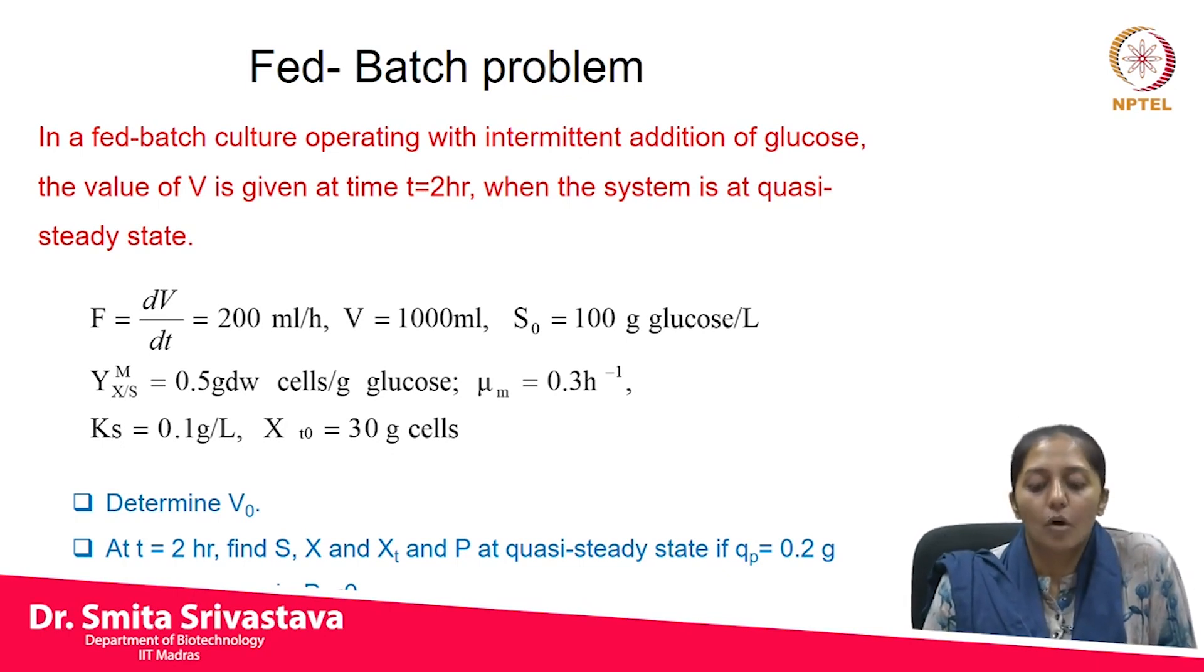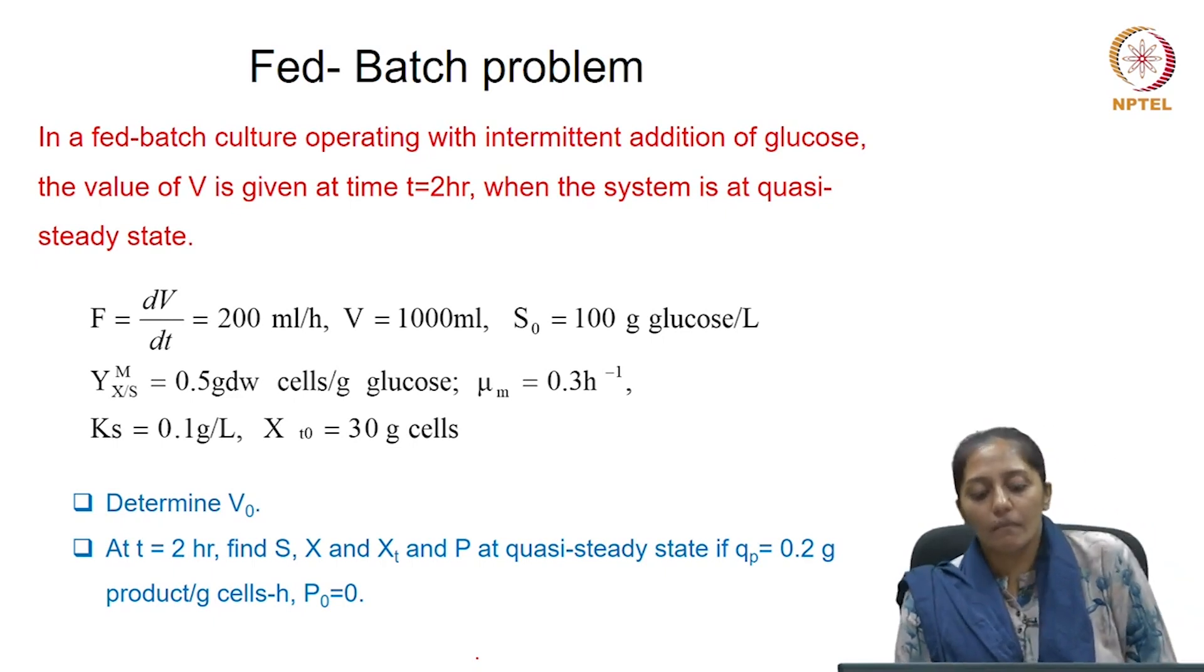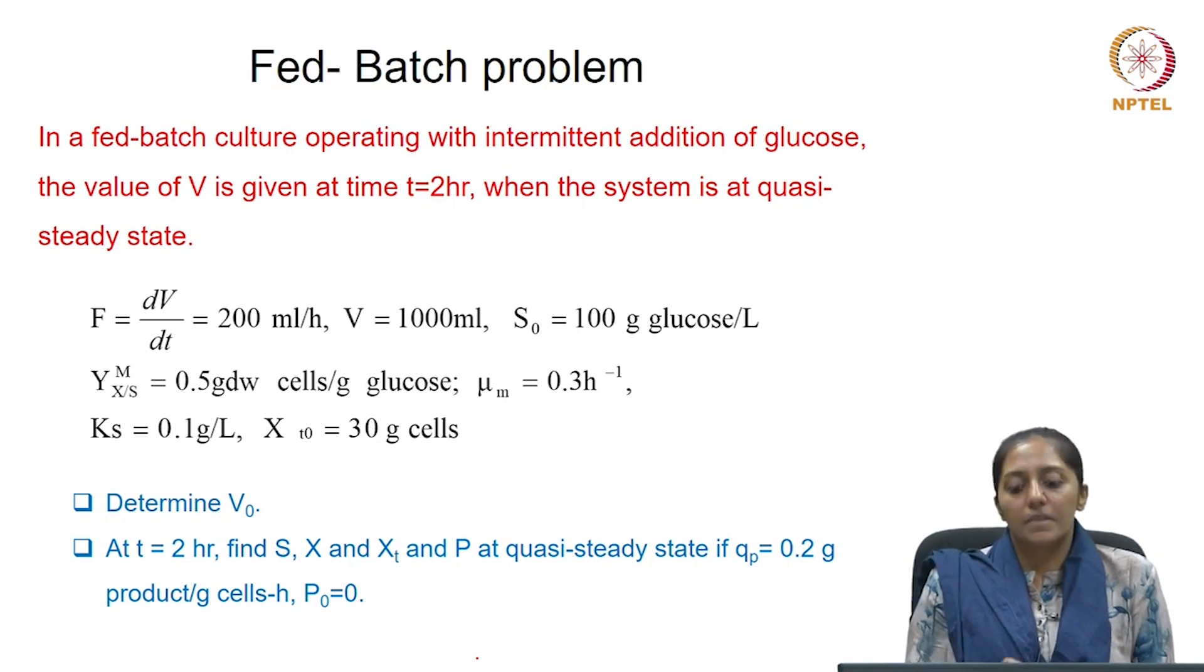In a fed-batch culture operating with intermittent addition of glucose, the value of the volume at time t equals 2 hours is given as 1000 ml. At this time, the system is running at quasi-steady state.